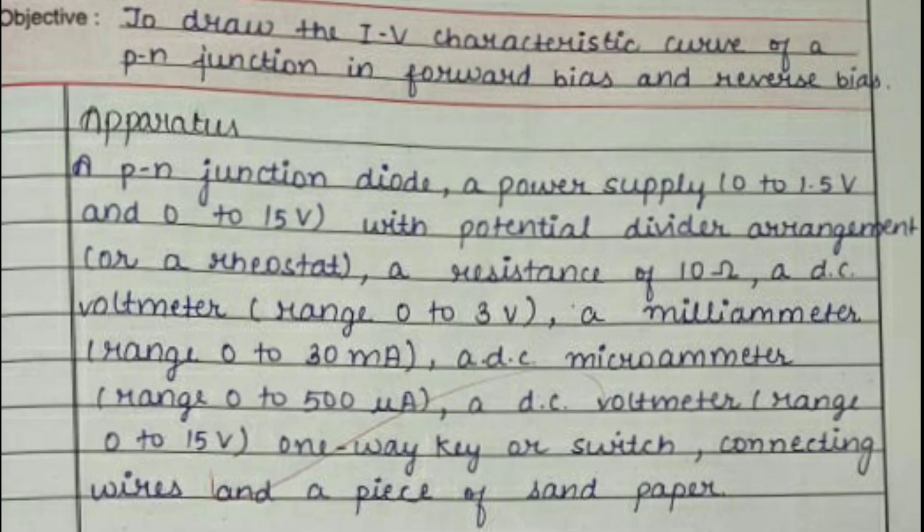As you can see in this image, the objective of this practical is to draw an IV characteristic curve for the PN junction in forward bias and reverse bias. Here IV stands for I = current and V = voltage.